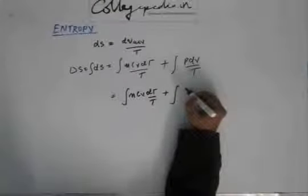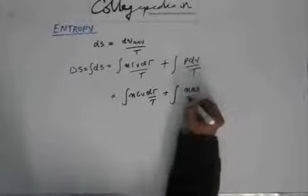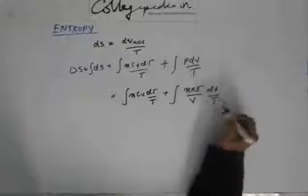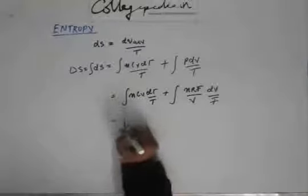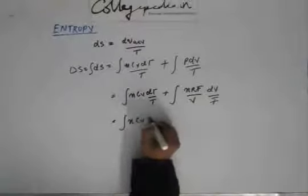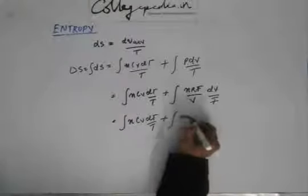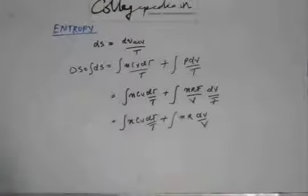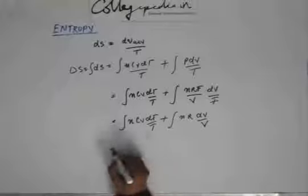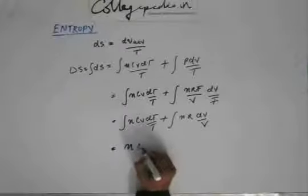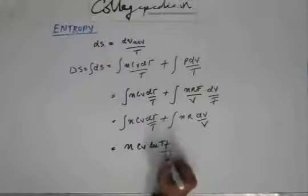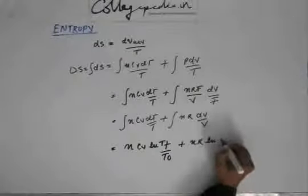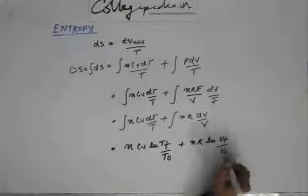We need to express the integrand as a function of volume, which can be done easily by writing pressure as p = nRT/V from the ideal gas equation. Now T cancels, and we have the expression to be integrated as a function of V. This integration is simple and easy, giving us nCv ln(Tf/Ti) + nR ln(Vf/Vi) once we put in the limits.